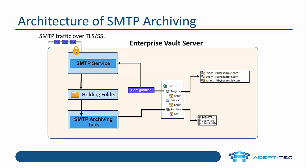Once the emails are in that holding folder, the SMTP archiving task considers them as candidates for archiving. The archiving task is running all the time according to the policies that are configured. One of the things you get to configure is a target email address — you can see in the top right-hand corner that we've got three target email addresses configured in this system. So for instance if a journal email came in for evsmtp1@example.com and we've set up that target email address, then the archiving task will archive that item and put it into the appropriate archive.